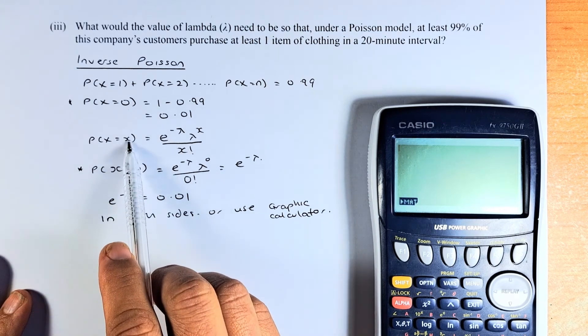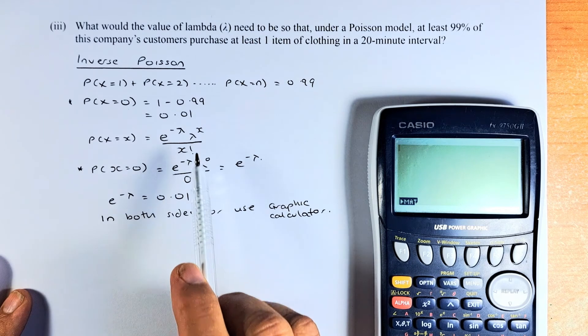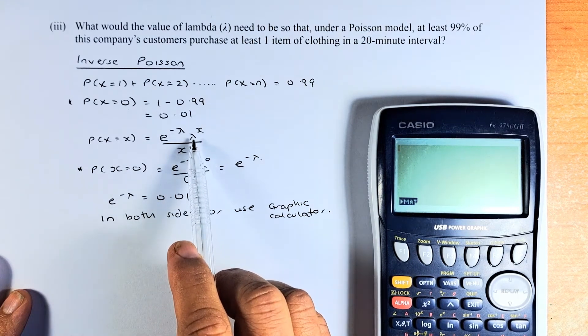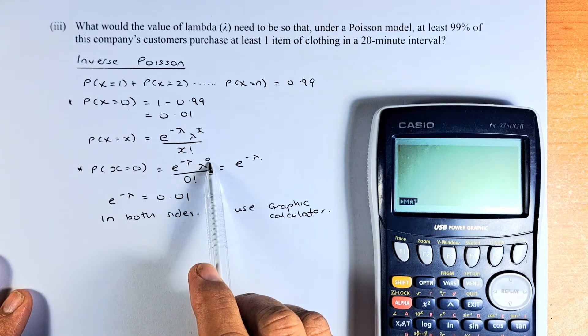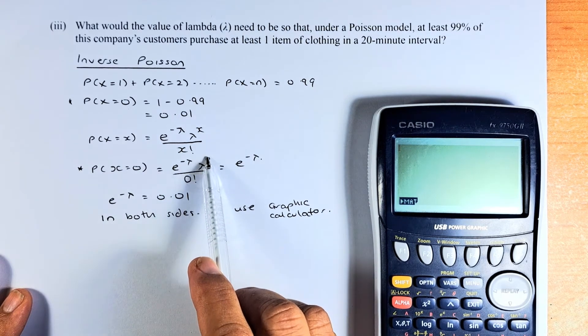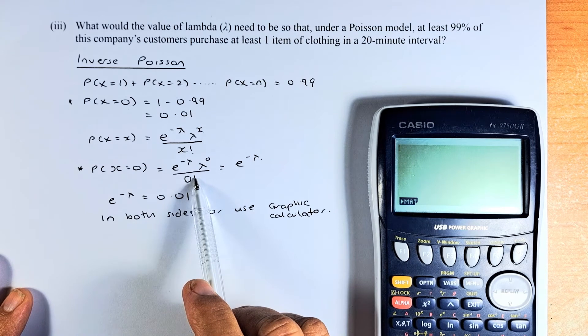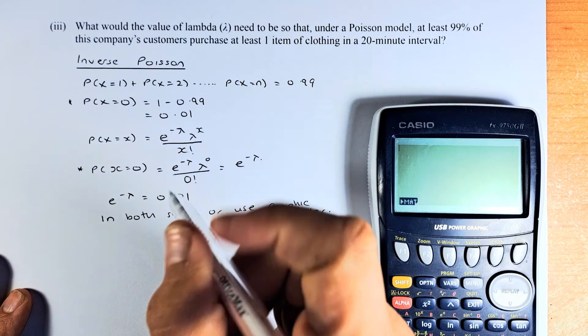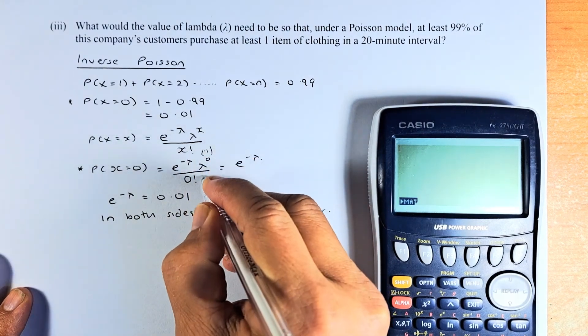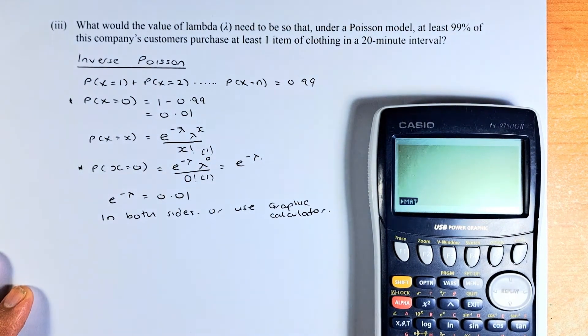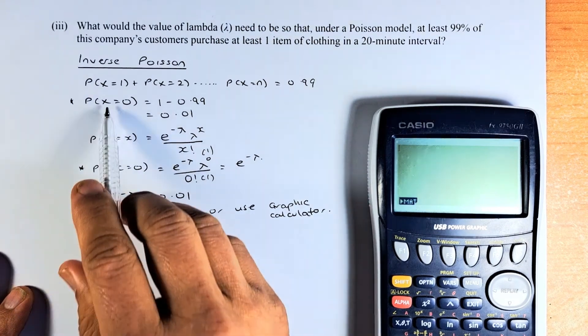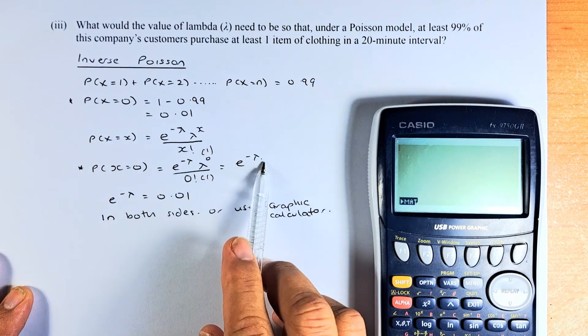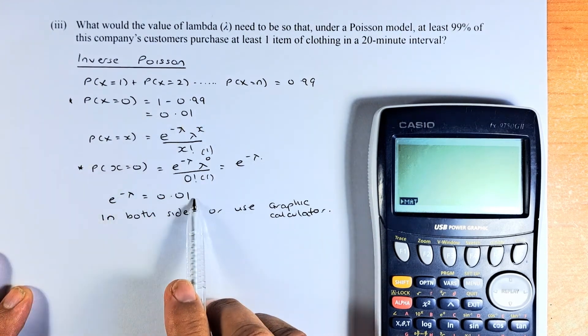So if X equals to 0, you replace the X with 0. This part becomes 0 and 0 factorial. Lambda power 0 is always equal to 1, so this will cancel out. 0 factorial is also 1. So probability of X equal to 0 is always going to be, this will become 1, that also becomes 1, and you only left with E minus lambda. So if you combine these two formulas, E minus lambda is going to be equal to 0.01.